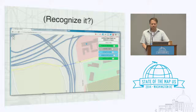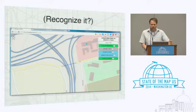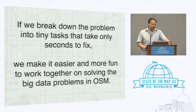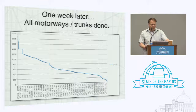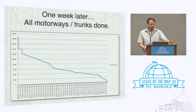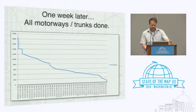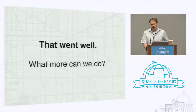The Remap-a-tron highlighted the deleted roads. I got a file from Firefogram in Germany — he gave me all the deleted roads and I put them in the Remap-a-tron, and people started working on it. It turns out if you break the problem into tiny tasks that take only seconds to fix, you make it easier and more fun to work together on solving these big problems in OSM. The graphs show that one week later we had already remapped all the motorways and trunks, and another three weeks later we had all the other deleted ways back in. That actually went quite well.